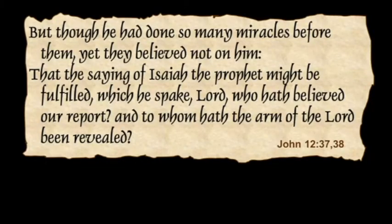In John 12, starting about verse 37, John says: "But though he had done so many miracles before them, yet they believed not on him, that the saying of Isaiah the prophet might be fulfilled which he spoke: 'Lord, who hath believed our report, and to whom hath the arm of the Lord been revealed?'" John is commenting that they were in disbelief as Isaiah predicted, and he's quoting from what is obviously the opening line of Isaiah 53.